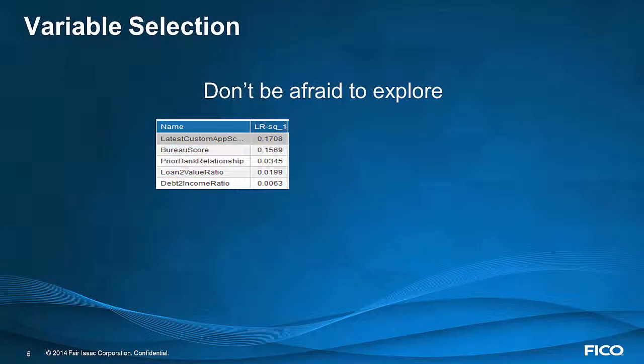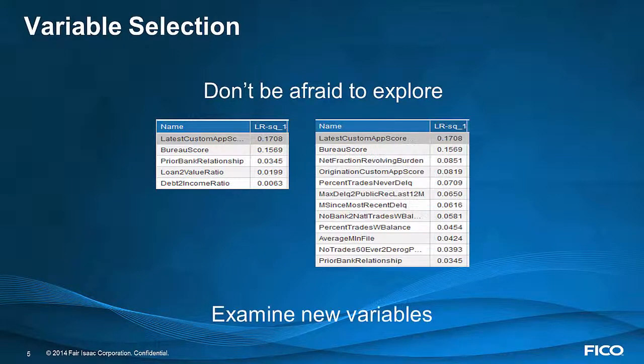Once your policy rules are implemented, then what you have is the potential population that you might use data analysis to make decisions. First of all, start with the variables that you're using today, and take a look at the existing splits in comparison to the splits that the data wants to give you to see if they potentially should be changed. Don't be afraid to explore additional variables that you might have available at time of implementation. You might find that there are other variables that are more predictive than those that you're already using.